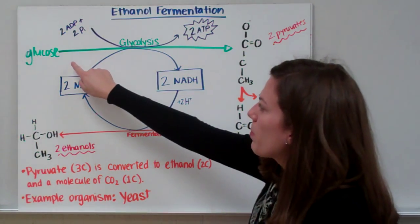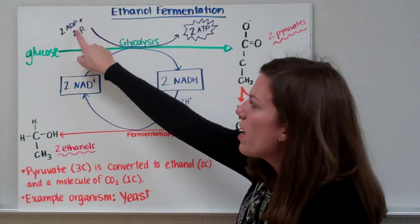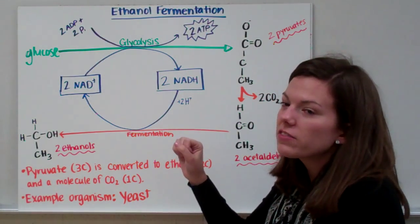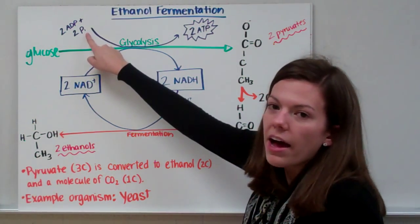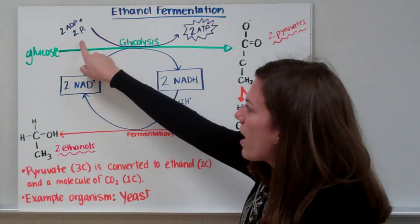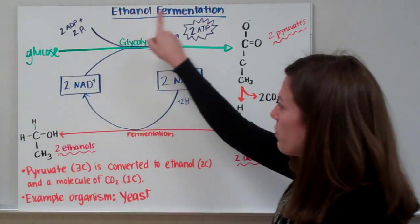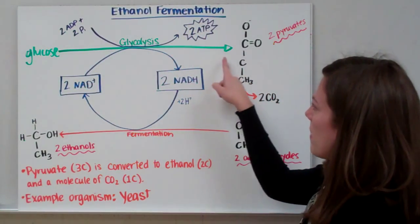And remember, when we're breaking down our glucose during glycolysis, we're changing two ADPs and adding a phosphate to them. Remember, P sub I represents our phosphates. So we're adding two phosphates to two ADPs. Therefore, we're making two ATP in the process of glycolysis.